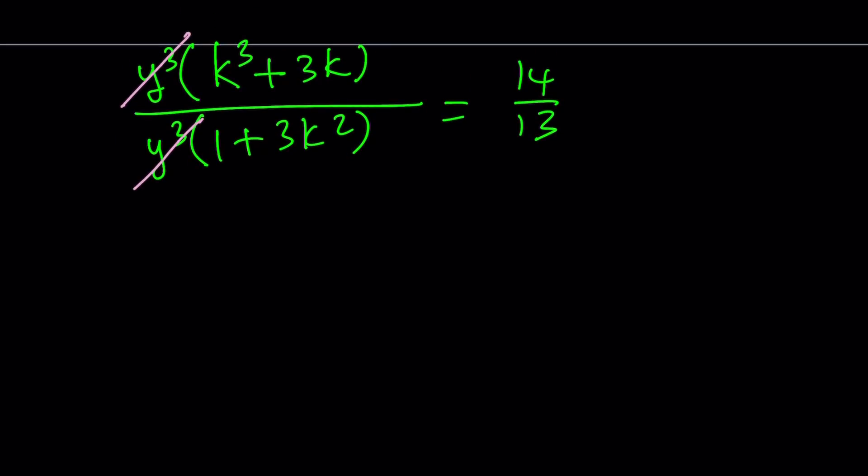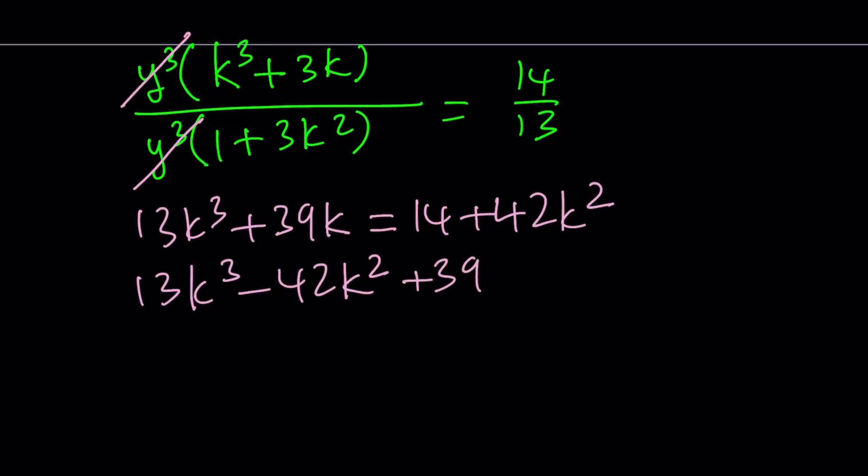So now we get a cubic equation from here. Let's cross multiply. That gives us 13k cubed plus 39k equals 14 plus 42k squared. Awesome. Let's go ahead and put everything on the same side. We're going to try to solve this cubic equation. 13k cubed minus 42k squared. And then I have 39k minus 14 is equal to 0. Awesome.